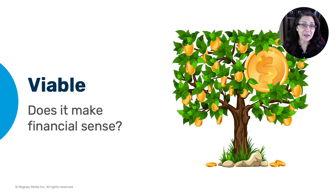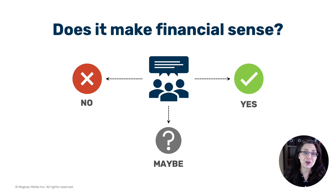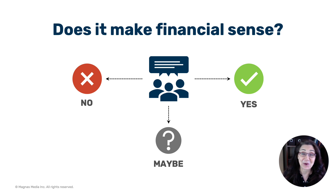Viability refers to finance — does it make financial sense to you, to your teams, to the people who are funding your projects, or people who will be doing business with you and buying from you? Your audience is trying to make a quick decision. The question they're trying to answer is: does this solution make financial sense? And the quick answer they need is yes, no, or maybe. So your slide needs to answer that question quickly.